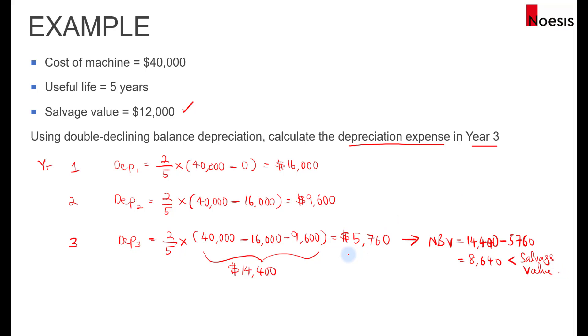In other words, this $5,760 is not the depreciation expense for year 3. So what do you need to do then? From $14,400 to $12,000, the depreciation expense would have been $14,400 minus $12,000, the salvage value. So it would have been $2,400 instead of $5,760. This is not the answer for this example.